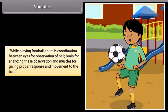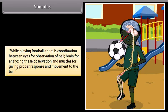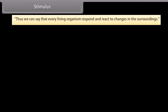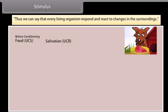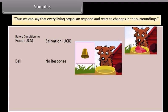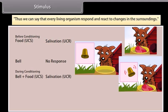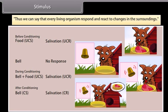While playing football, there is coordination between the eyes for observation of the ball, the brain for analyzing these observations, and muscles for giving proper response and movement to the ball. Thus, every living organism responds and reacts to changes in its surroundings.